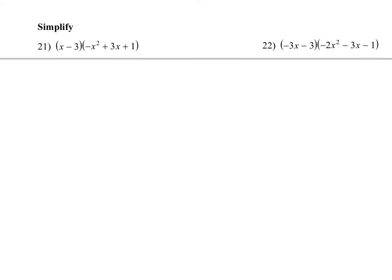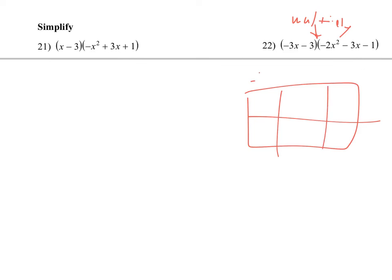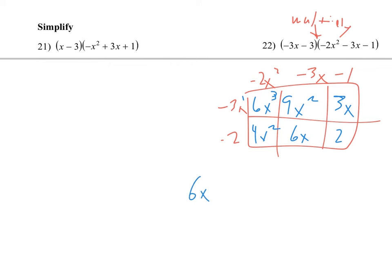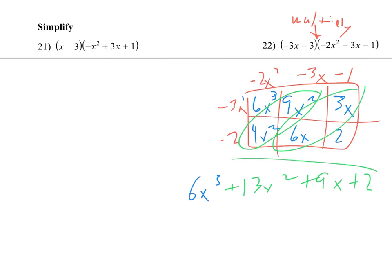Next, they want us to simplify — two parentheses next to each other means multiply. I like to use the box to multiply. Unlike factoring (inside out), this is outside in. Multiplying the terms: x to the third, then 9x squared, 3x, 4x squared, 6x, and 2. Combining like terms: 9x squared and 4x squared give 13x squared, 3x and 6x give 9x, and the 2 has nothing to combine with.